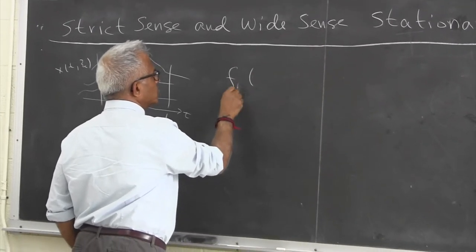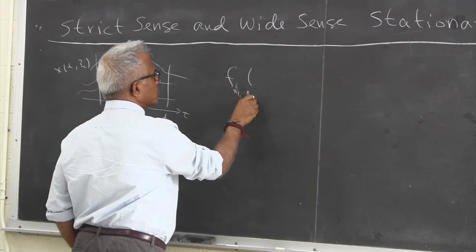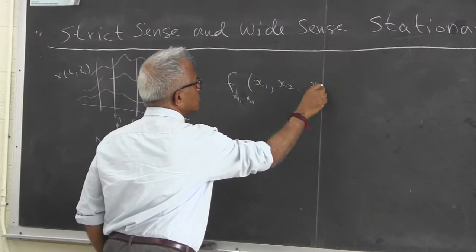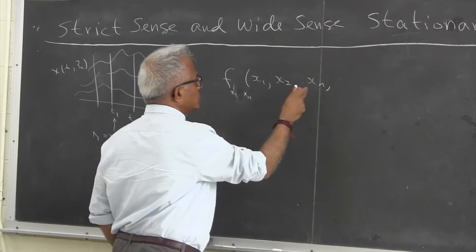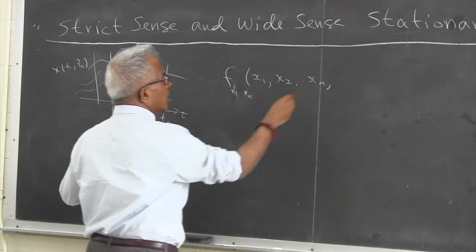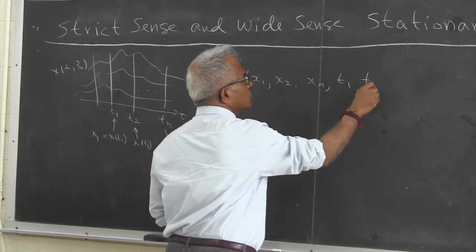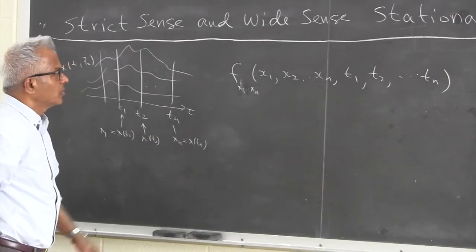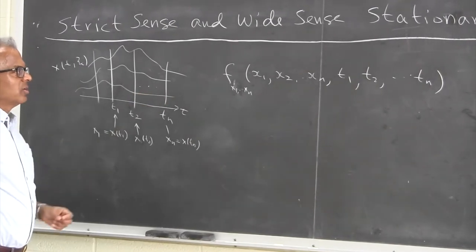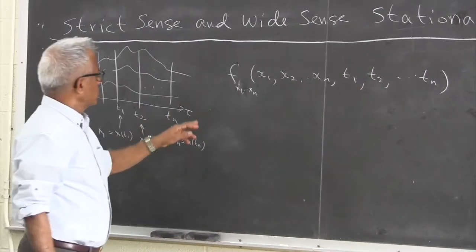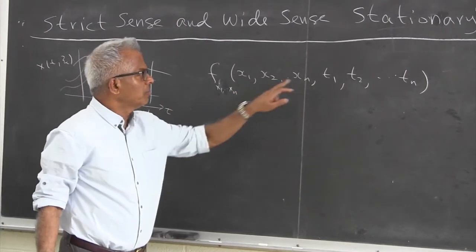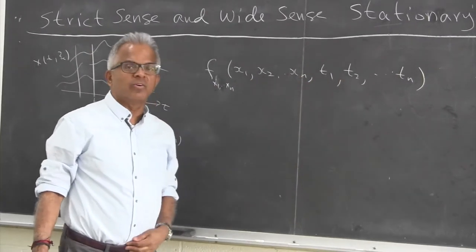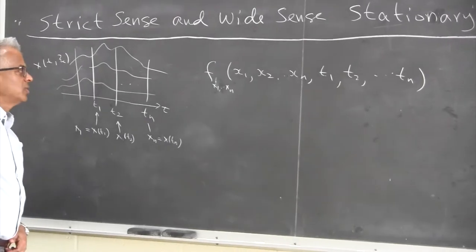The joint density function of random variables x1, x2, ..., xn — where x1 corresponds to time index t1, x2 to t2, and so on up to tn. Because these cover the time indices, the joint density function, in addition to having variables x1 through xn, can also be a function of t1 through tn.